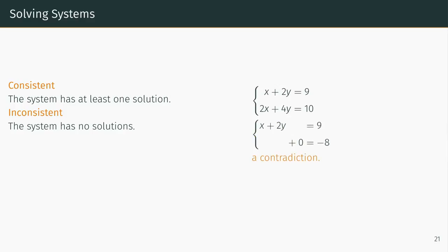This contradiction reveals to us that there are no values of x and y that simultaneously satisfy both equations from the original system, therefore this system is inconsistent.